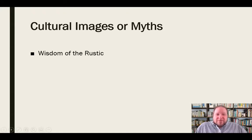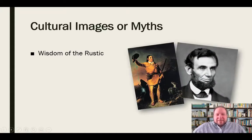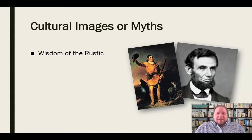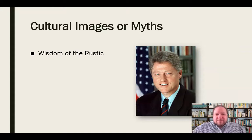Let's start with cultural images and myths. First is the wisdom of the rustic. We like to look at people from humble beginnings who pull themselves up by their bootstraps — particularly in westernized, individualistic cultures. We love people who rise above their station and do great things. We look at people like Davy Crockett and Abraham Lincoln and their humble beginnings. Politicians use this: Joe Biden continually talked about being a humble guy from Scranton, his small-town roots, his dad losing his job. Bill Clinton always talked about being from Hope, Arkansas — the man from Hope.